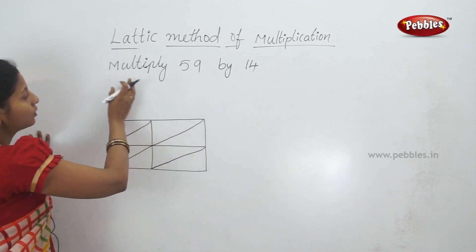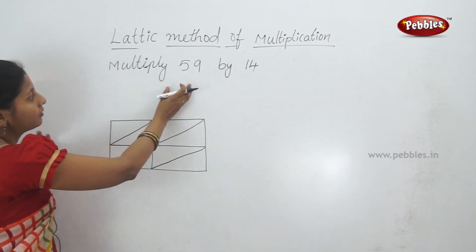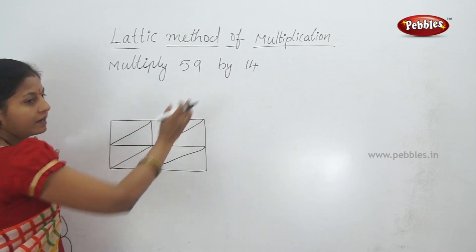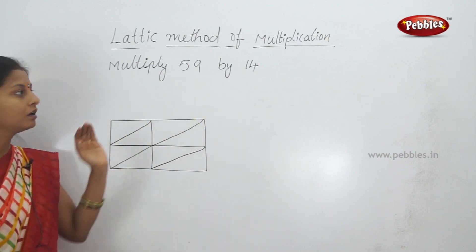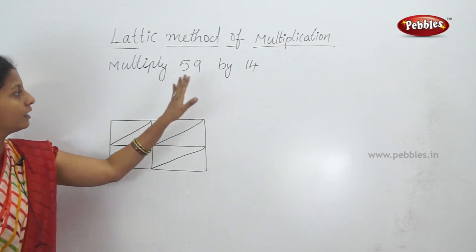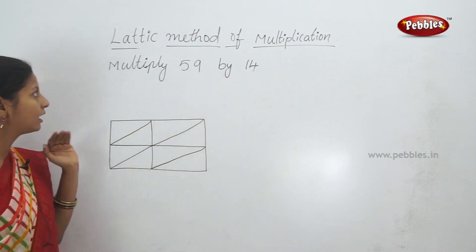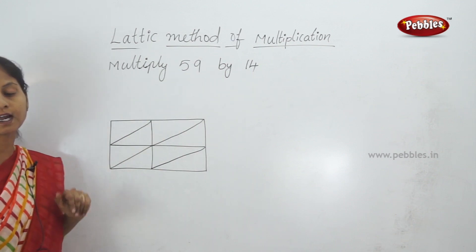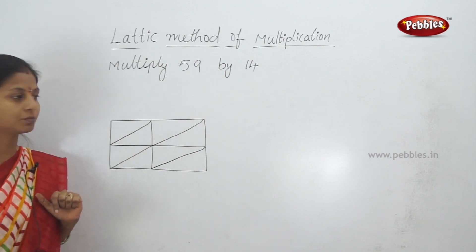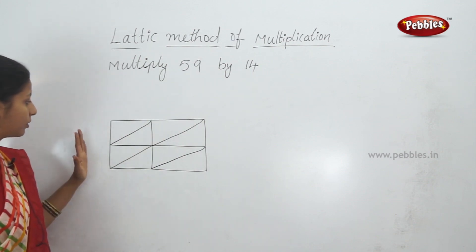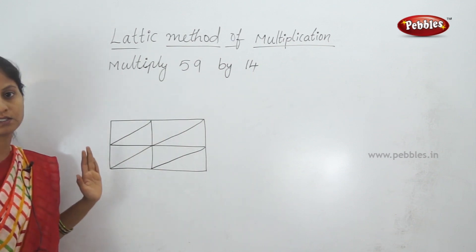So here, what question did we do? Multiply 59 by 14. You can multiply 59 by 14. You can learn all this in the lattice method. Now I will draw the corners.